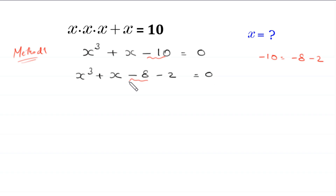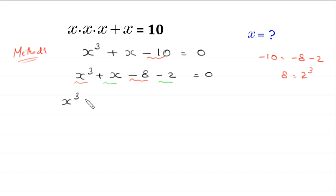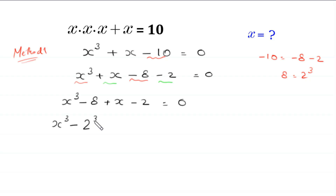We split this negative 10 as negative 8 minus 2. We write this negative 8 with this x cubed because 8 is equal to 2 cubed, and we write this negative 2 with this plus x. Then this equation will become x cubed minus 8 plus x minus 2 is equal to 0. Next, x cubed minus 8 can be written as x cubed minus 2 cubed plus x minus 2 is equal to 0.